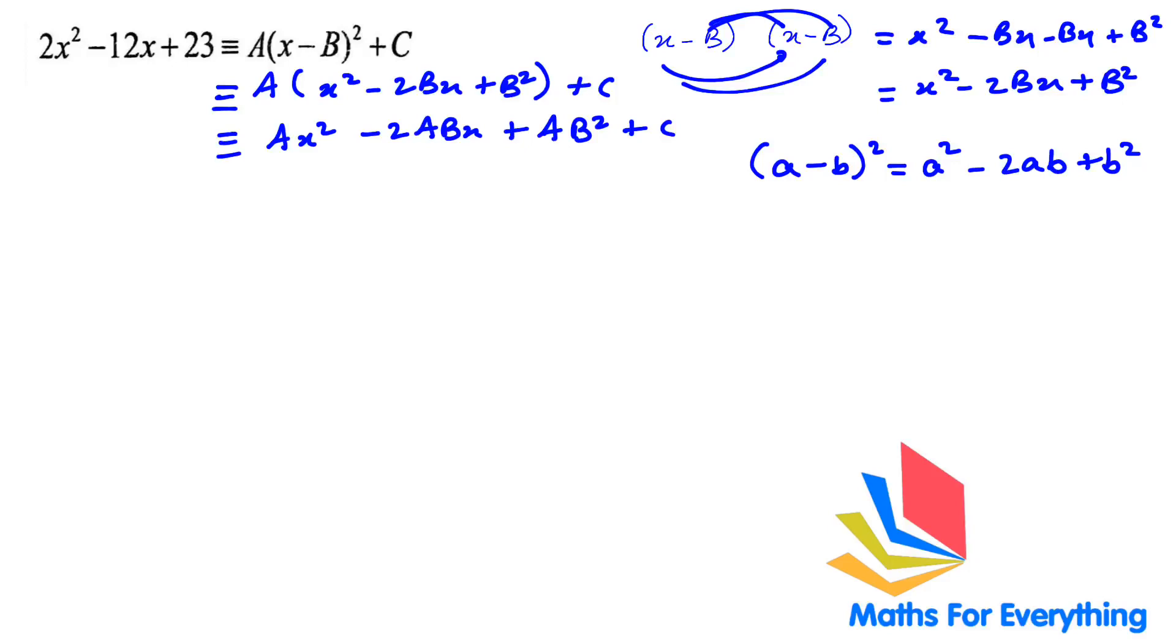The first thing we will do is compare coefficient of x². The number before x² is 2 and the alphabet on the right hand side before x² is a. Therefore, 2 is equal to a.